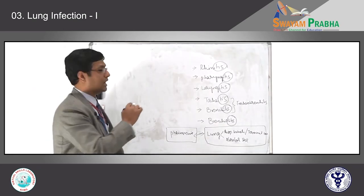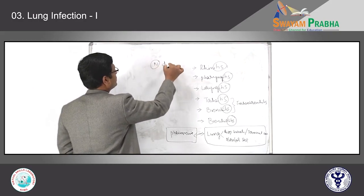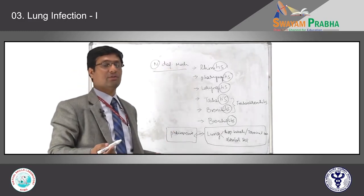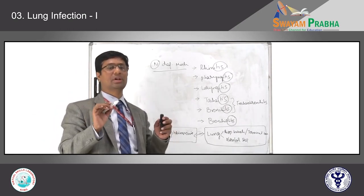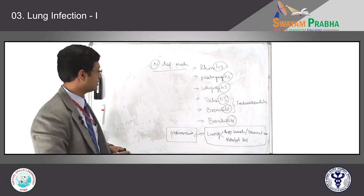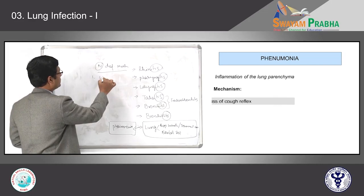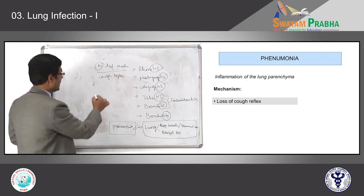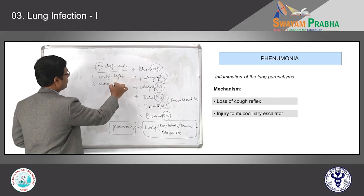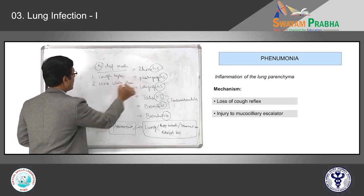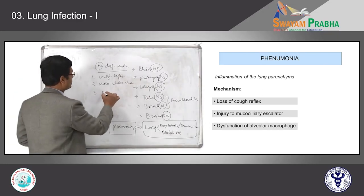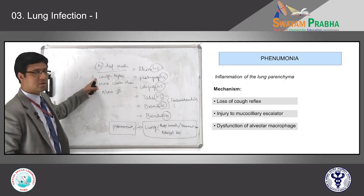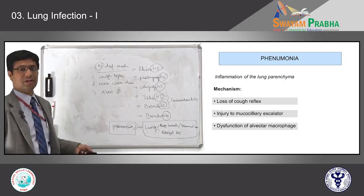In the previous class, I mentioned what are the normal defense mechanisms that prevent infection of the lung parenchyma when they are working normally in healthy individuals. Those are: first, the cough reflex; second, mucociliary clearance; and finally, alveolar macrophages. Impairment of any of these normal mechanisms ultimately leads to infection.